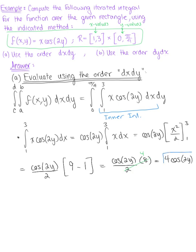Remember, this is only the inner integral. We've just evaluated this region here. So plugging this back in, we're now left with the integral from 0 to π/4 of 4 cosine(2y) dy. And now we're ready to evaluate the outer integral.